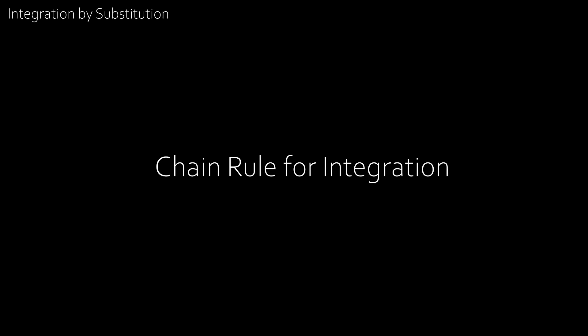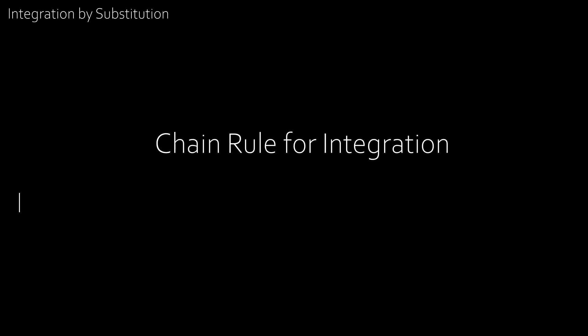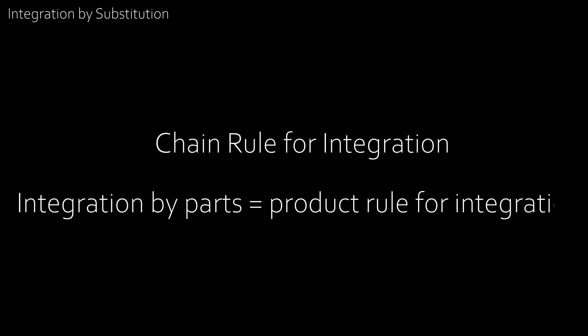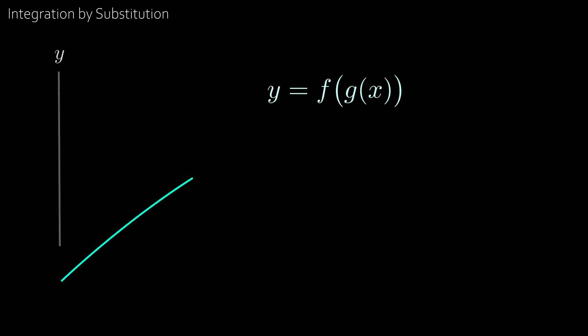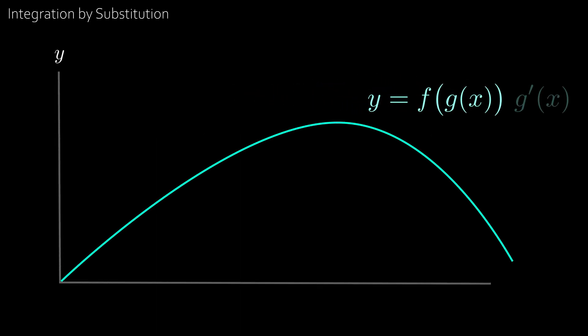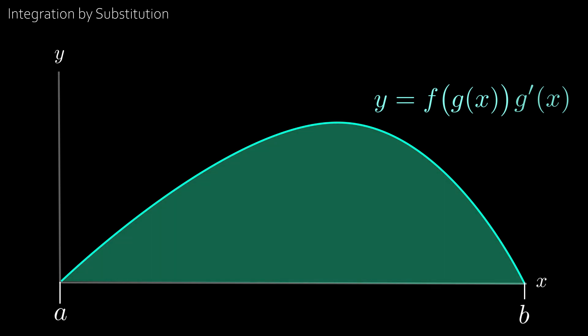Integration by substitution is a sort of chain rule for integration, similar to the way integration by parts is a product rule for integration. We focus on composite functions, and the way it works is we take y equals f of g of x, scaled with g dash of x, and we'll explain why later. Say we wanted to find the area under the curve between a and b - this area is the integral of that function.